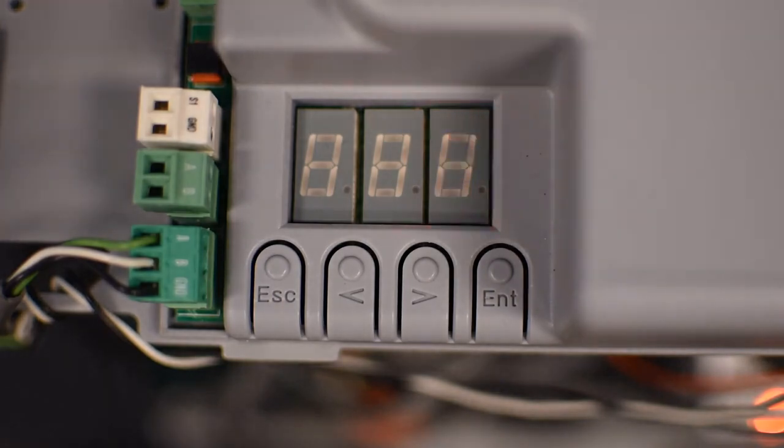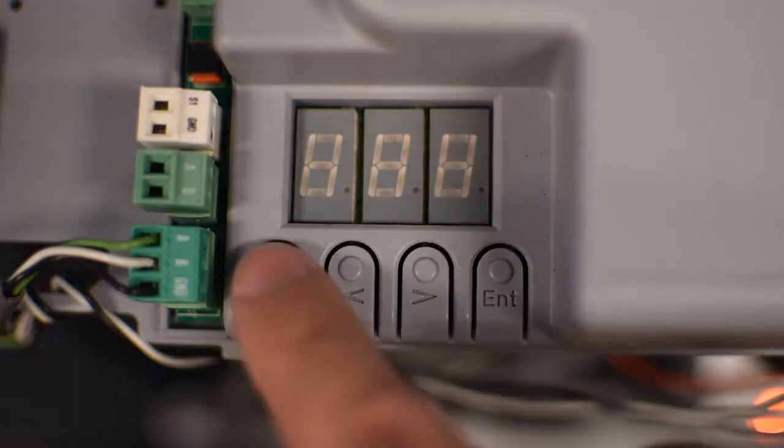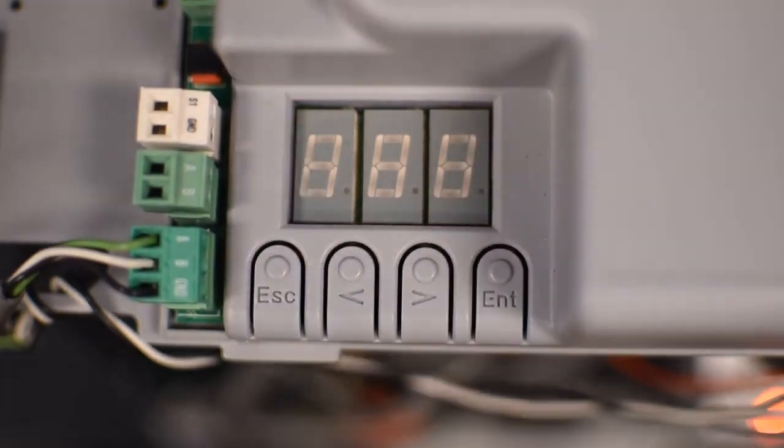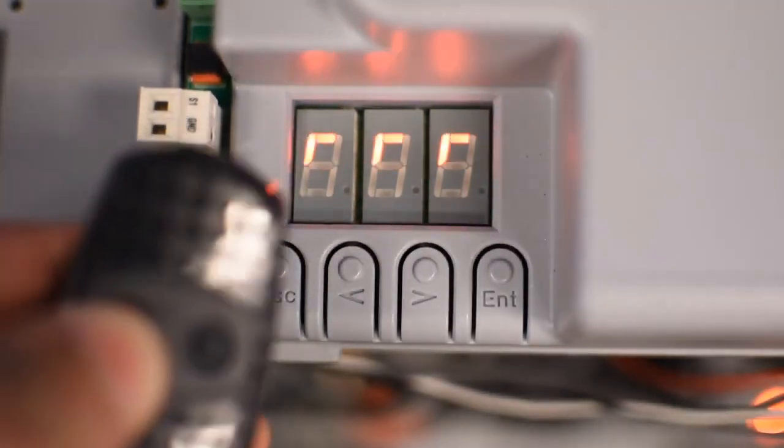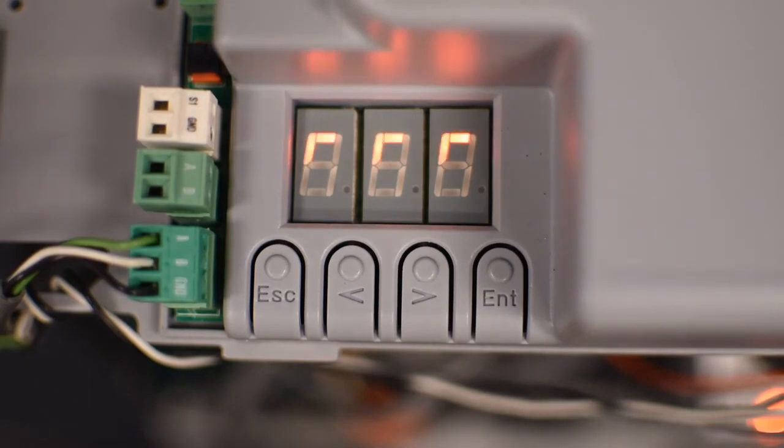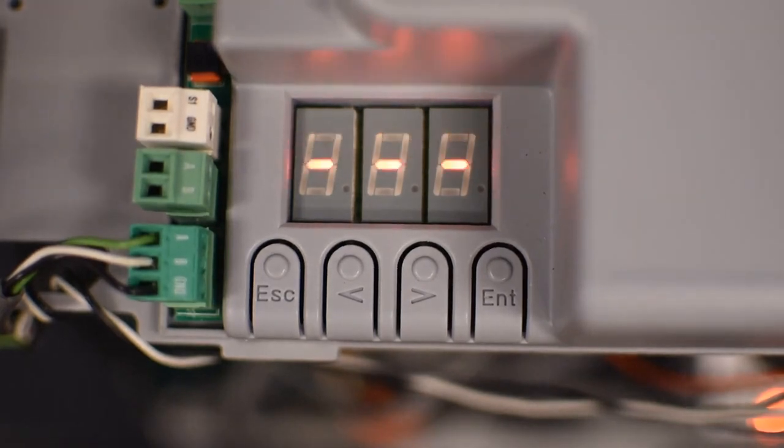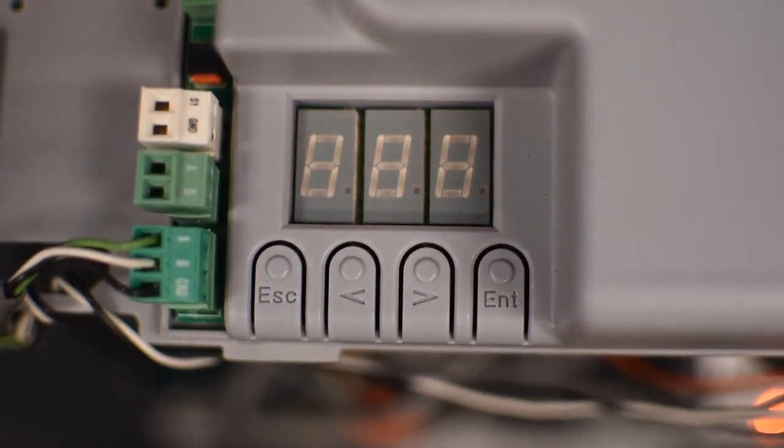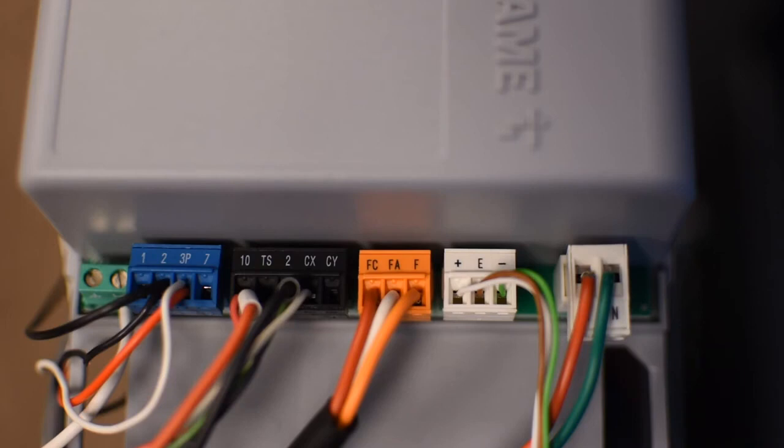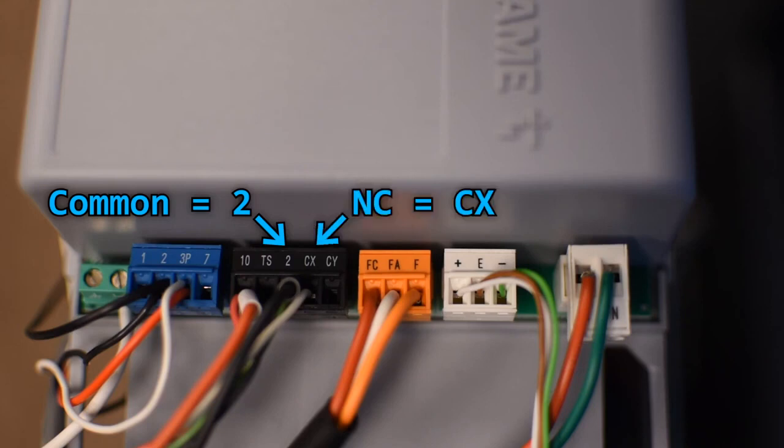That signal is going to be stored in the user number that was blinking before. In this operator, we can store up to 250 users. If you connect a safety device like a photo cell, the normally closed contact should be connected with the command in pin 2 and the normally closed output to the pin CX.